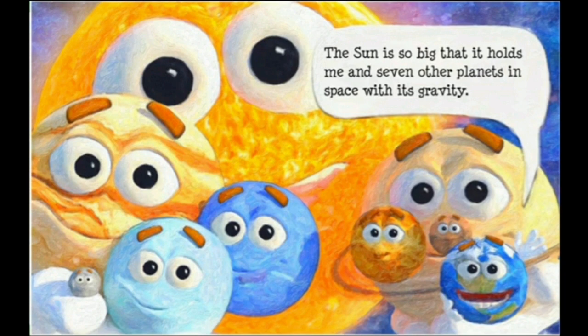Each star has a massive amount of gravity, and the Sun is a star — that's why there are planets surrounding it. Every single planet surrounds a star, and every star has at least one planet.